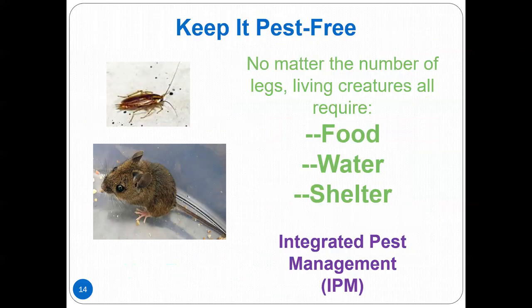The fourth principle of a healthy home is keep it pest free. Pests have the same basic needs as humans: food, water, and shelter. Health problems associated with pests and pesticides include eye, nose, and throat irritations, skin rashes, nausea, stomach cramps, central nervous system damage, kidney damage, and the risk of cancer.